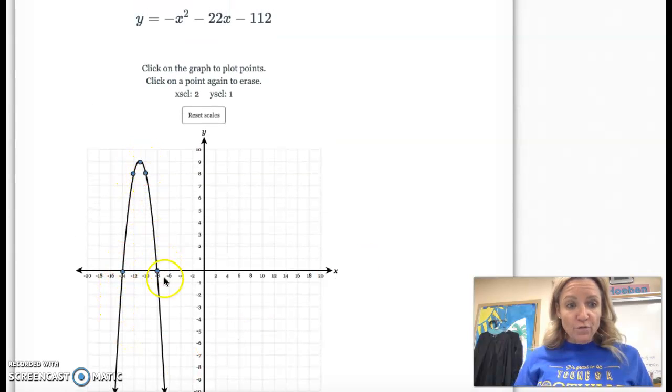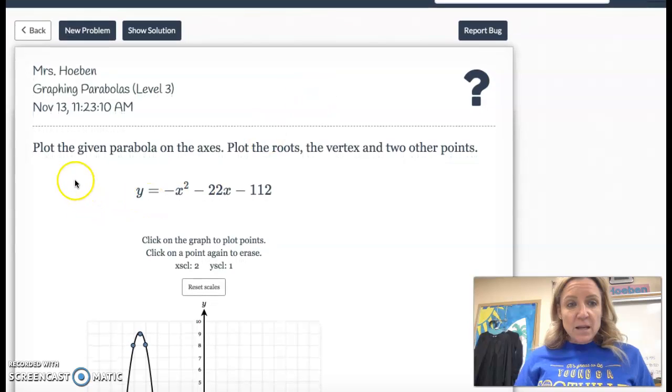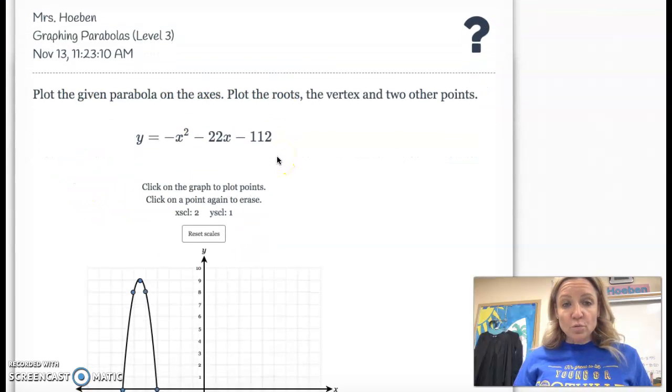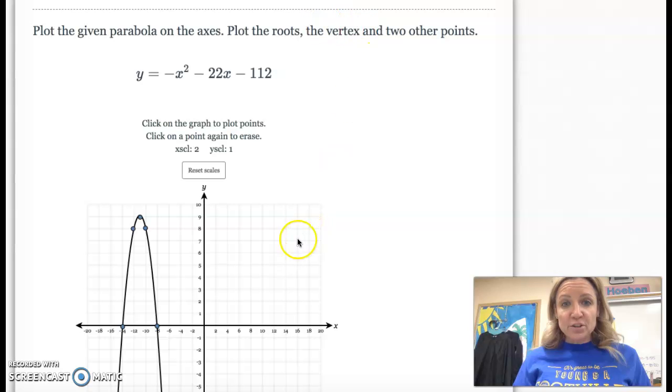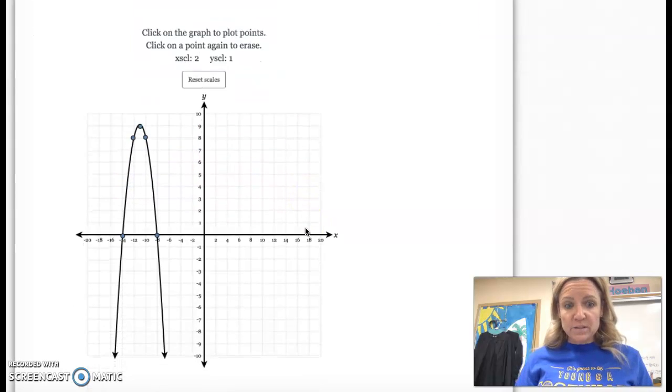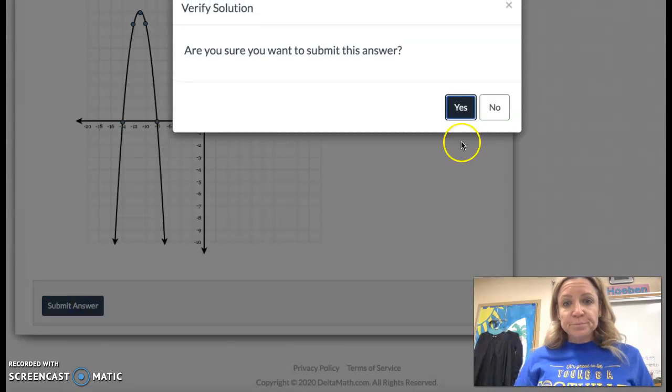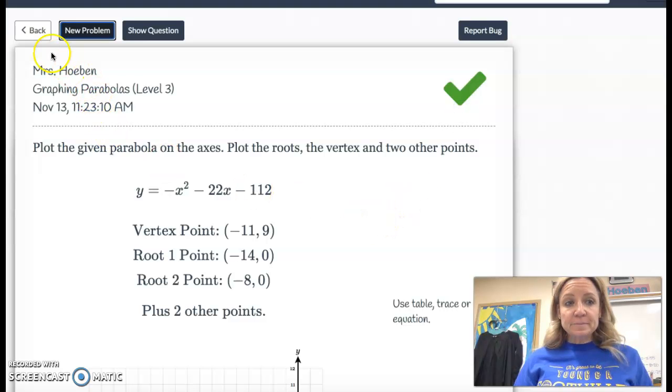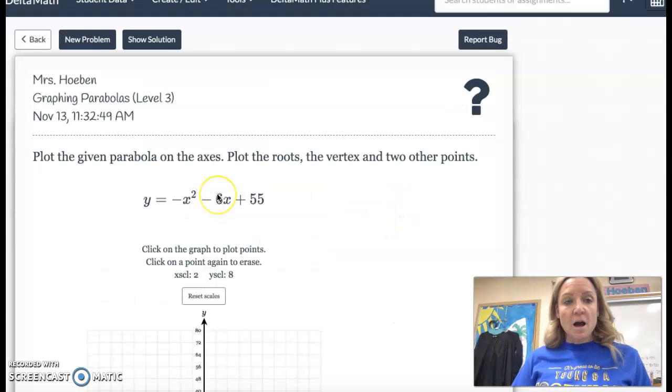One, two, three, four, five. And the direction said that you need to have the roots and the vertex. So the roots are here and here on the x-axis. And here's obviously the vertex and then any two other points. So let's check it. All right. Likes it. All right.